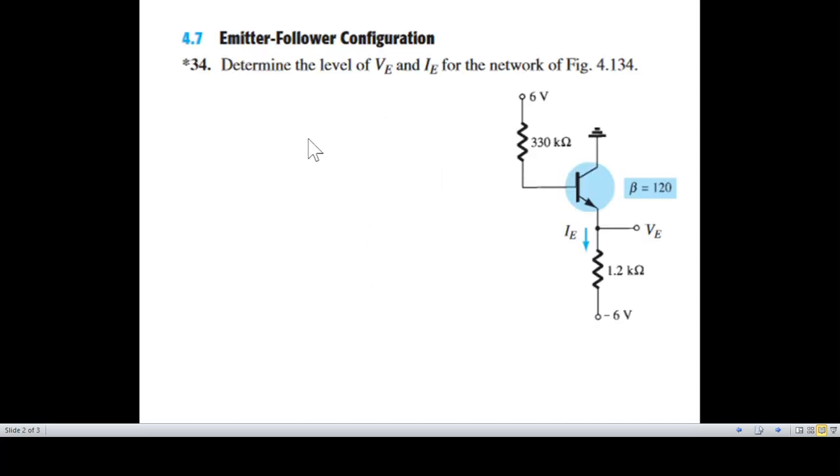This is the question. We have to determine VE and IE. VE is the emitter voltage and IE is the current through the emitter circuit.